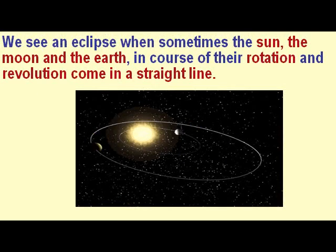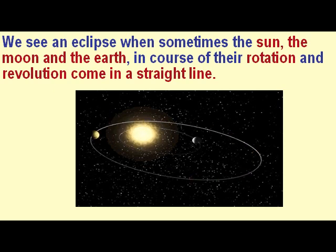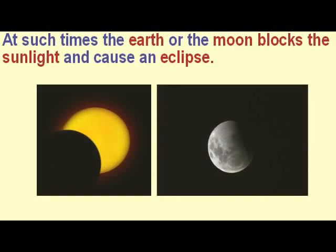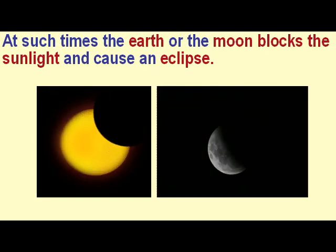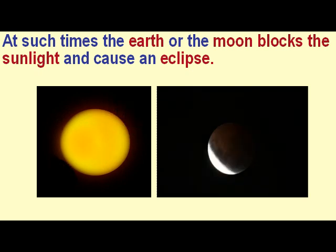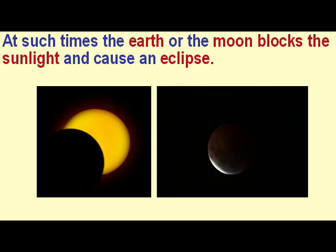We see an eclipse when, sometimes, the sun, the moon, and the earth, in the course of their rotation and revolution, come in a straight line. At such times, the earth or the moon blocks the sunlight and causes an eclipse.